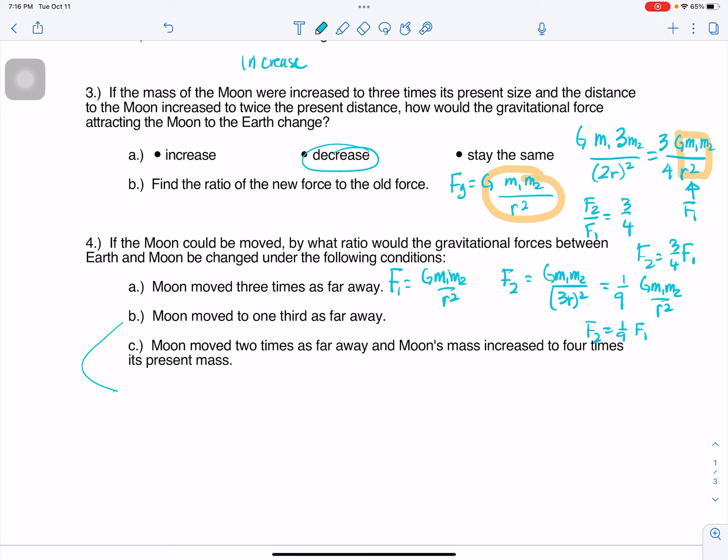All right, that was A. B, moon moved to 1 third as far away. Alright, so I've got the same F₁. Our F₂ is Gm₁m₂ over 1 third r, whole quantity squared. And so this is just math. So I'm going to have 1 ninth r squared. But then when I change the improper fraction, then I have nine times Gm₁m₂ over r squared. But remember, this is just F₁. So we've got F₂ is equal to nine times F₁. All right, that was B.